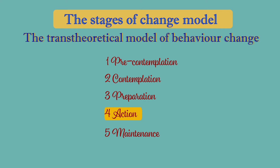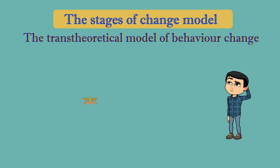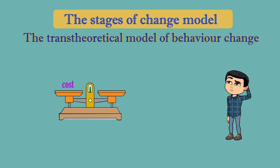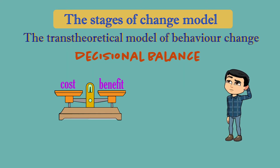Furthermore, even when an individual has reached the maintenance stage, they might slip back to the contemplation stage over time. The model also examines how the individual weighs up the costs and benefits of a particular behavior, which is referred to as decisional balance.